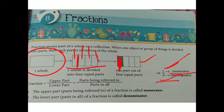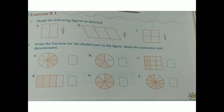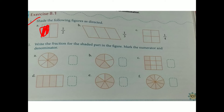Now we move to Exercise 8.1. Shade the following figure as directed. Here we go — 1 and 2. Total parts are 1 and 2. Shade the following figure: one part is shaded, total parts are two. Next, B — B is also the same.